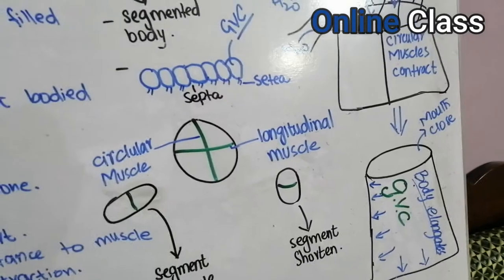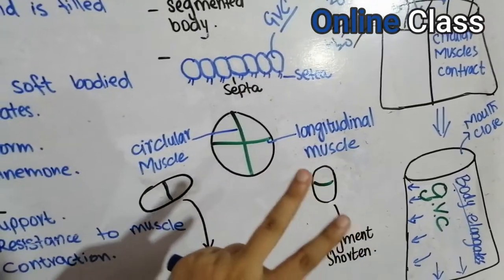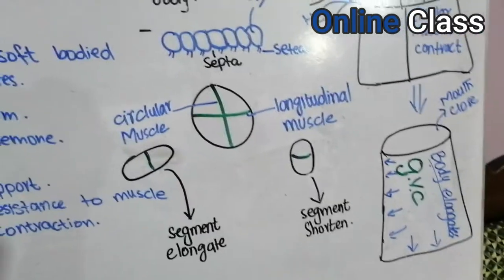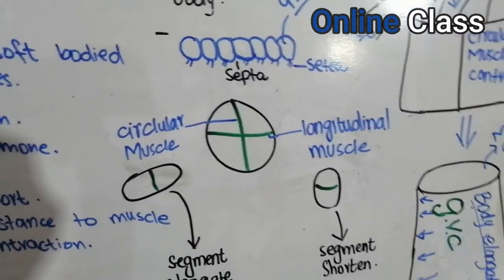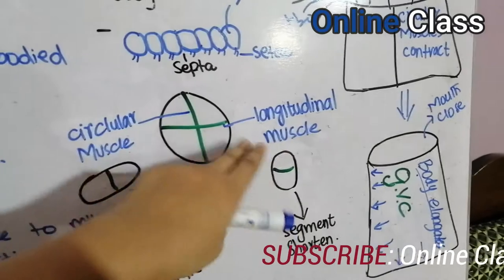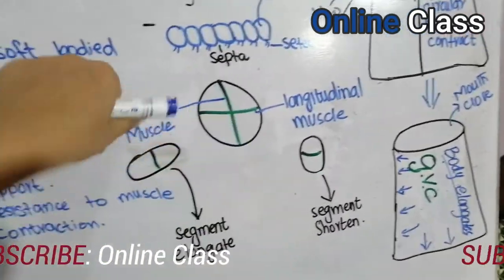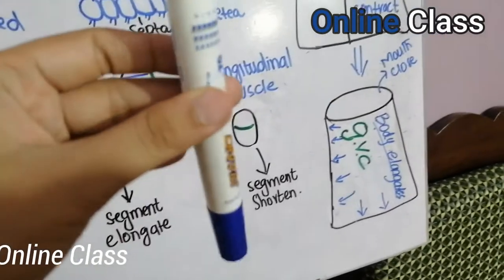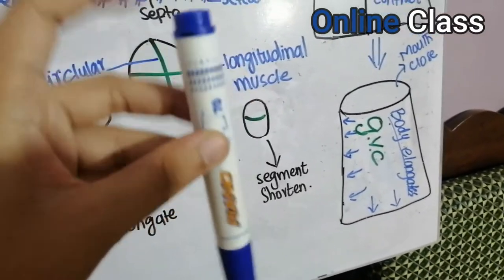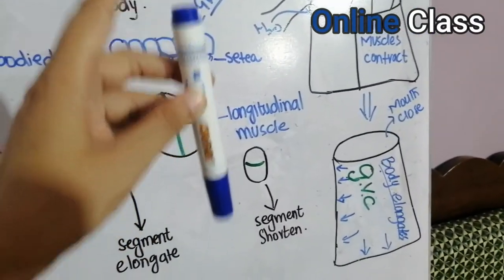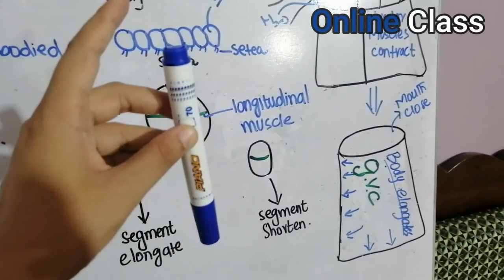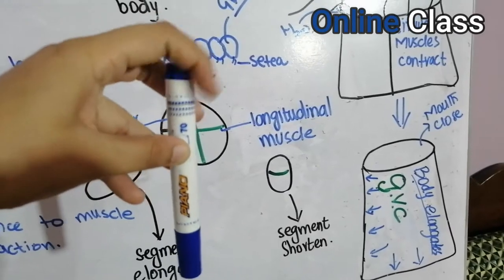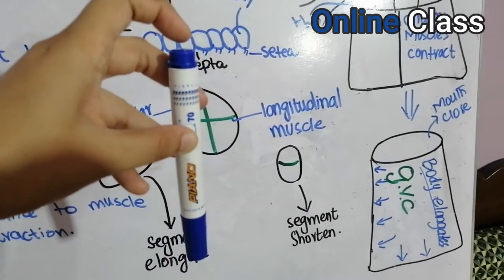Within each segment there are two types of muscles: longitudinal muscles running along the length, and circular muscles running around the body. If we take a marker as an example, the longitudinal muscles go along its length, and the circular muscles wrap around it like rings.